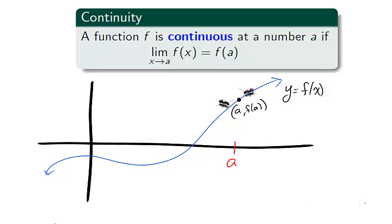In terms of ants, a function is continuous at x equals a if the ants meet and their meeting point is the point (a, f(a)).